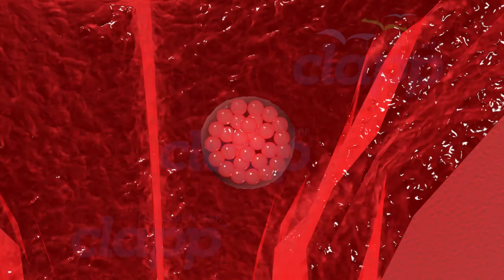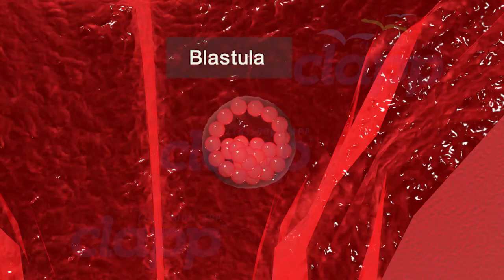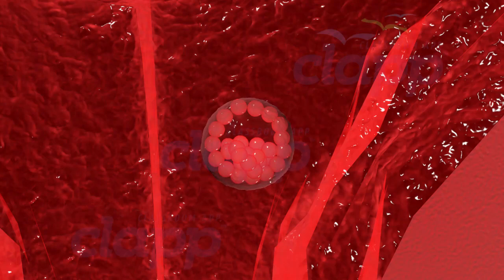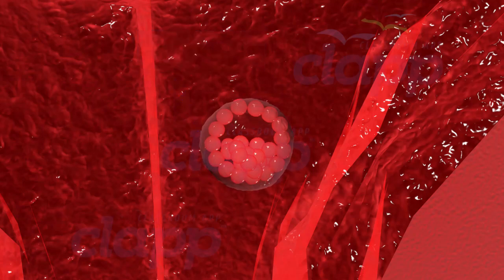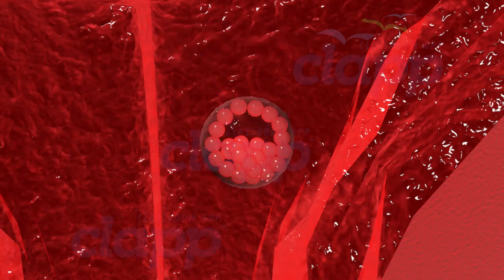The trophoblast cells secrete a fluid into the interior, creating a cavity called the blastocele. With the formation of the blastocele, the morula is converted into a blastula, called the blastocyst because of the peculiar cyst-like arrangement of blastomeres. The blastocyst has a single-layered wall, the trophoblast, and a group of cells attached to the inner side called the inner cell mass. The zona pellucida disintegrates, facilitating the rapid growth of the embryo. The trophoblast then gets attached to the endometrium, and the inner cell mass is differentiated into an embryo.